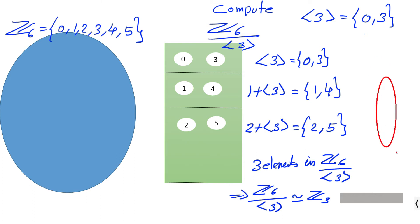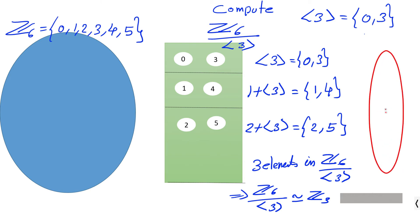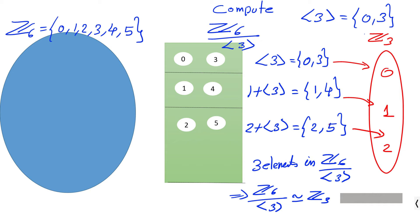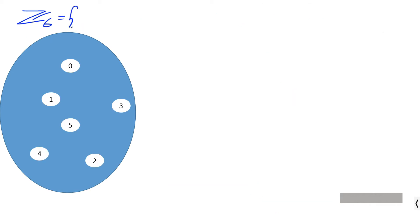Since the factor group Z6 over ⟨3⟩ has only three elements, it must be isomorphic to a group containing only three elements, which is Z3. We can also find a mapping from this factor group to the elements of Z3, that is 0, 1, and 2.